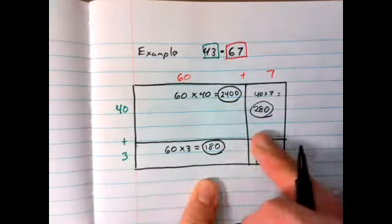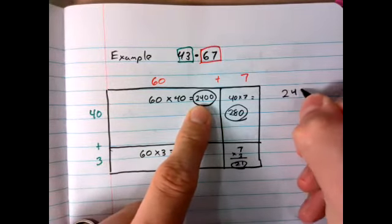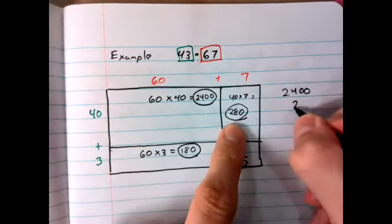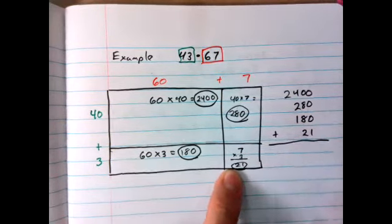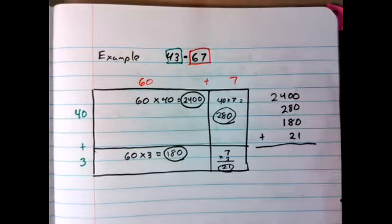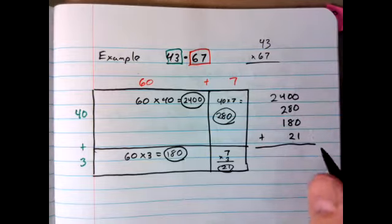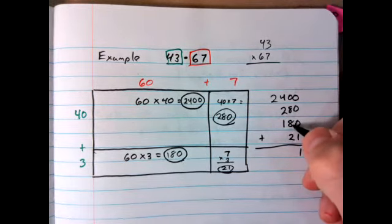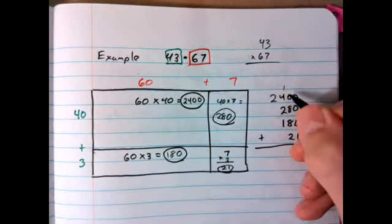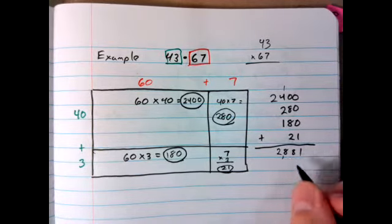Now I have four partial products. I work the partial products inside the area model. I tabulate next to it. Let's start with the biggest number: 2,400. Second biggest number: 280. Then 180. And 21. Now I can add them up. Let's add them up. 1. 8 and 8 make 16, so 18. 4 and 2 is 6, then 7, then 8. Another 8. Bring down my 2. Now I simply have the answer of 2,881.